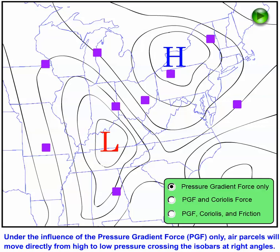Let's examine the paths air parcels will follow on this idealized weather map based on the combination of forces acting on the parcels. We have a map of sea level pressure here with an area of low pressure marked and an area of high pressure marked.